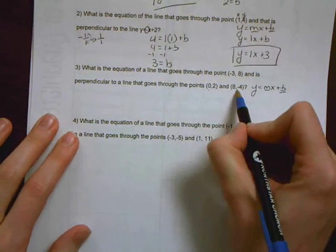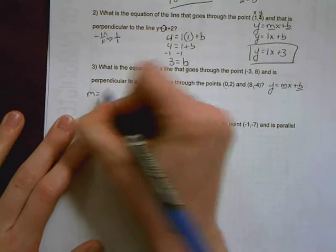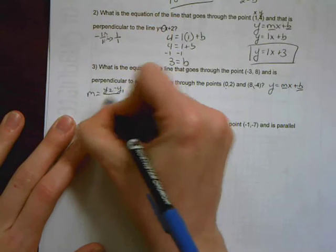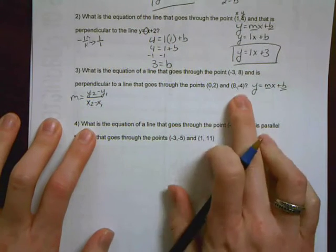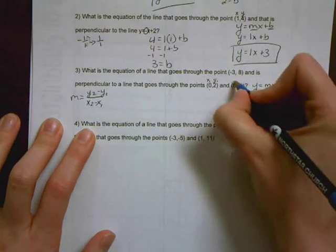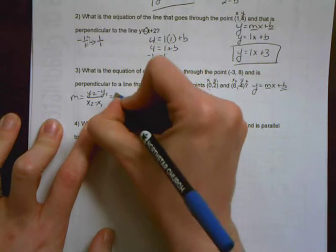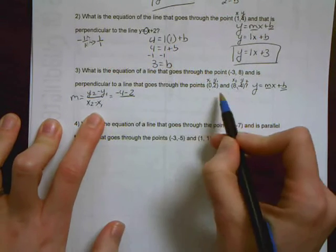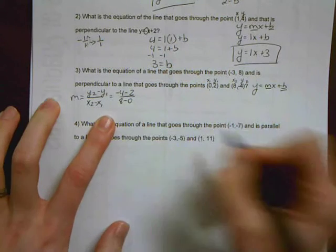So if you're given two ordered pairs of a line, then you can find the slope using our slope formula, which is m equals y2 minus y1 over x2 minus x1. Okay, using these two ordered pairs, here's x1 and y1, here's x2 and y2. So I'm going to say negative 4 minus 2 over, and then x2 is 8 minus x1 is 0.